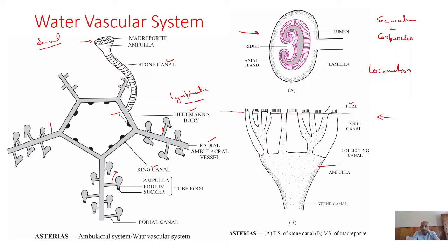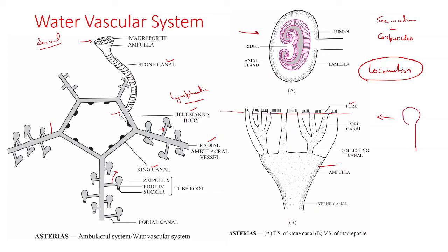Because of the absence of a head, the starfish can move in any direction according to its requirement. It can move horizontally as well as on vertical surfaces. Locomotion is carried out by alternating contraction and relaxation of the ampulla. The ampulla contracts, pushing water towards the sucker and elongating the podia. The sucker attaches itself to the substratum, the podium contracts, and the ampulla relaxes, thereby moving the animal forward. This is how the tube feet help in locomotion.